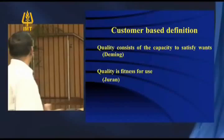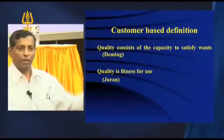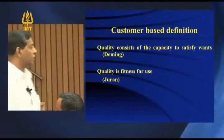The first is the customer-based definition. Quality consists of the capacity to satisfy the needs of the customer — that is what Deming says. So if you have certain needs from your customer, you should be able to satisfy those needs. Then only will the customers say that they are getting quality. And Juran says quality is fitness for use — fitness for the customer's use. So when the customer is able to use the product or service, you say that quality has been created.